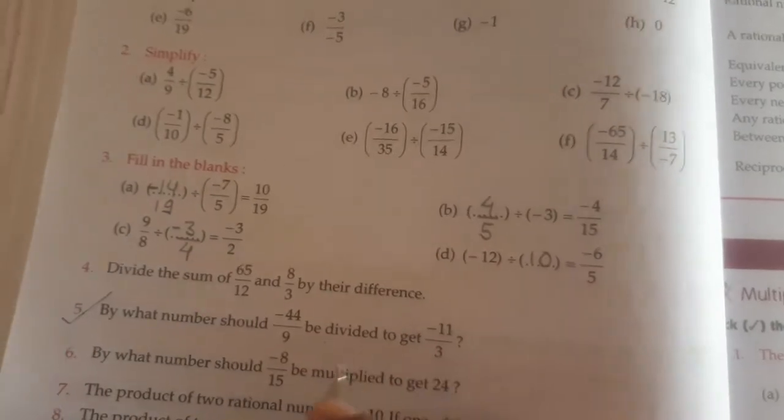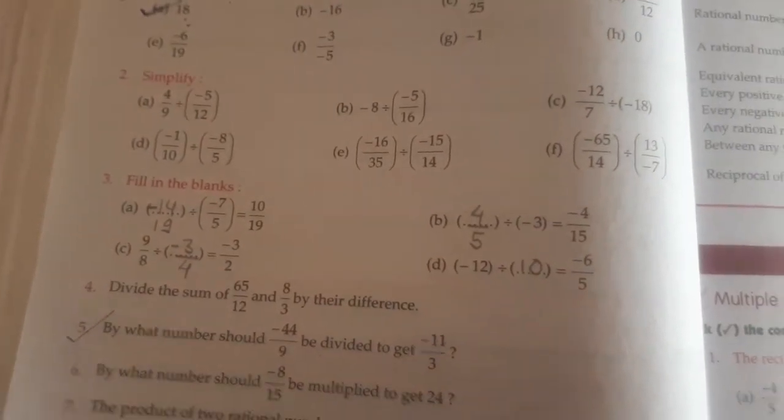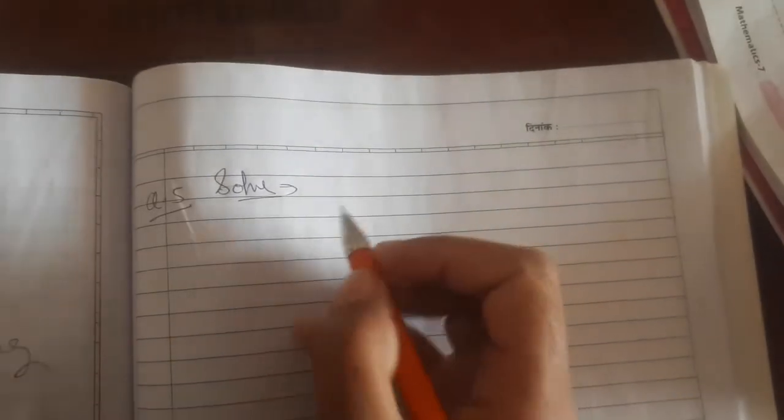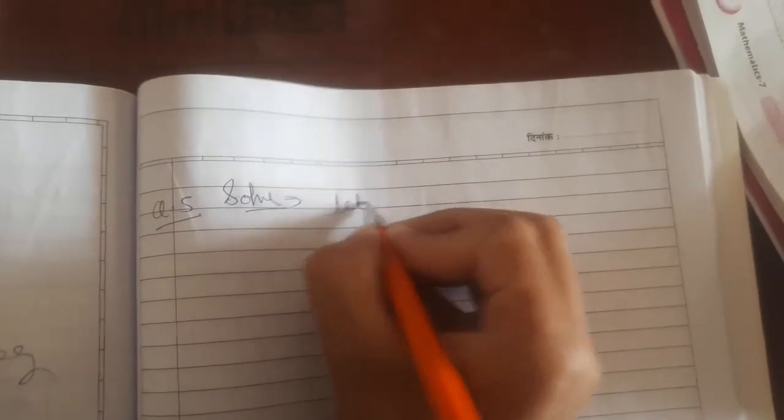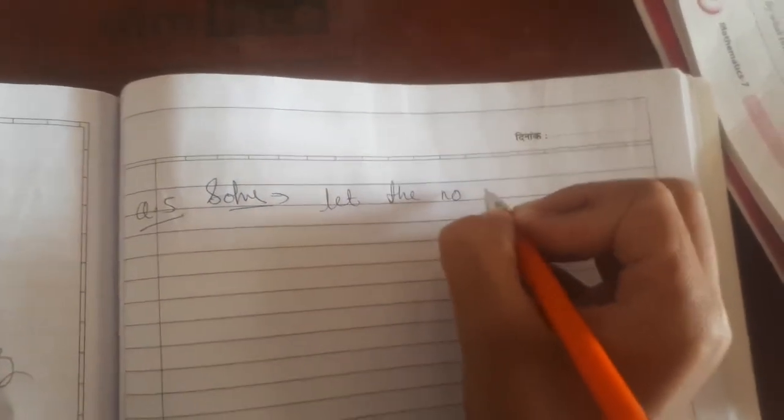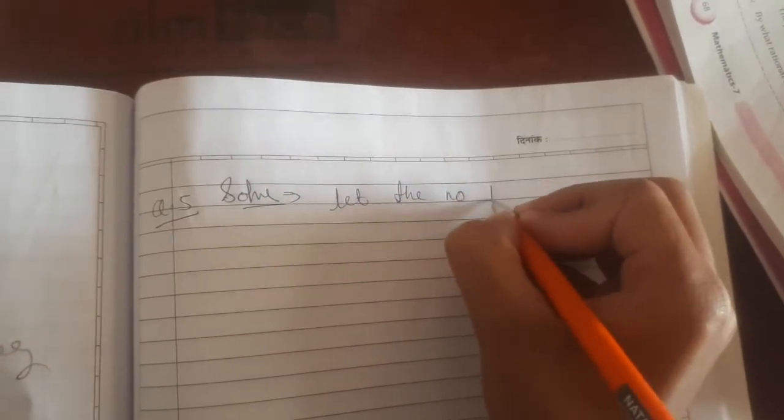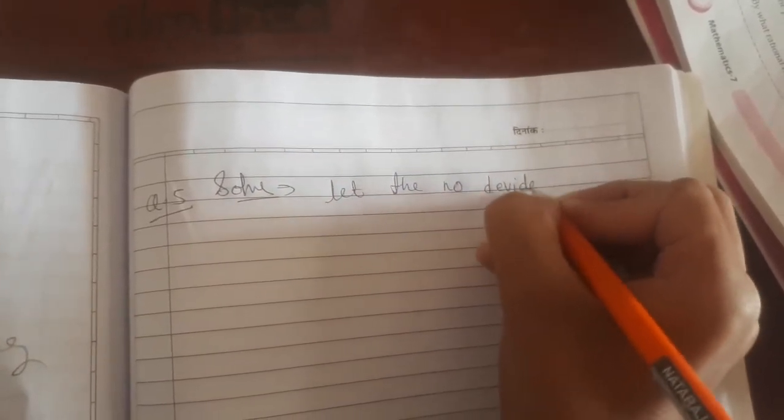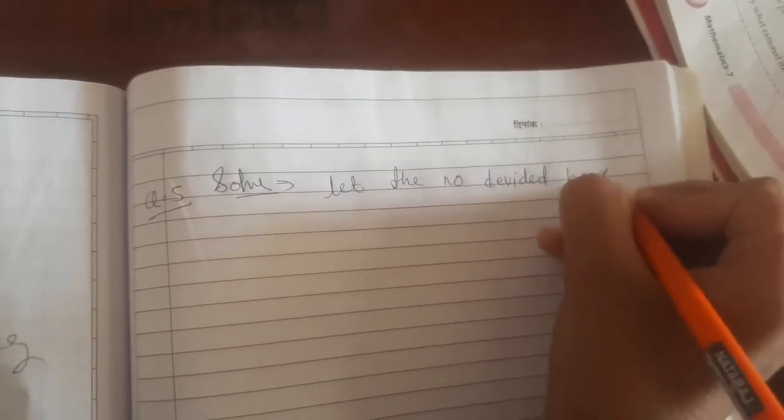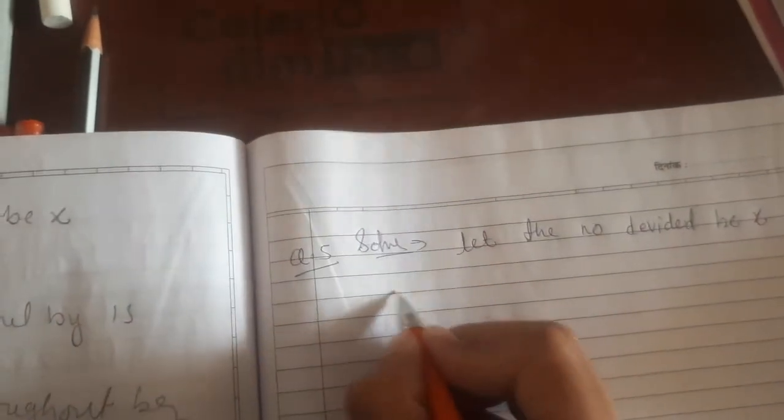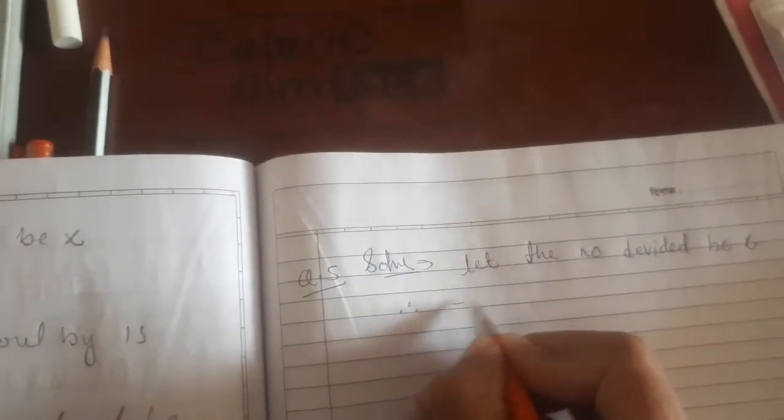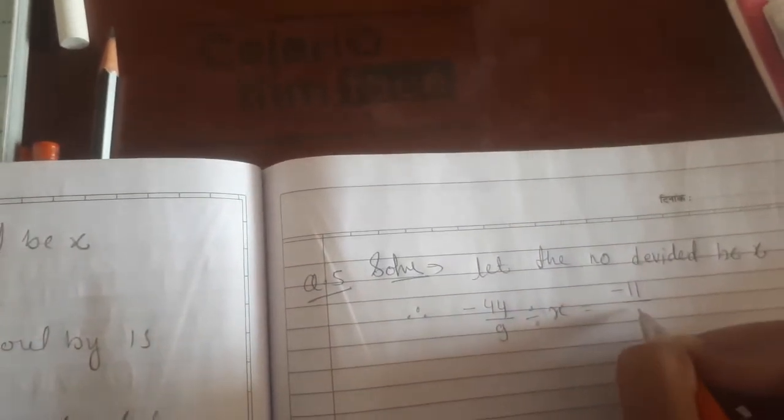So we will get -11/3. Let the number be divided by x. So -44/9 divided by x is equal to -11/3.